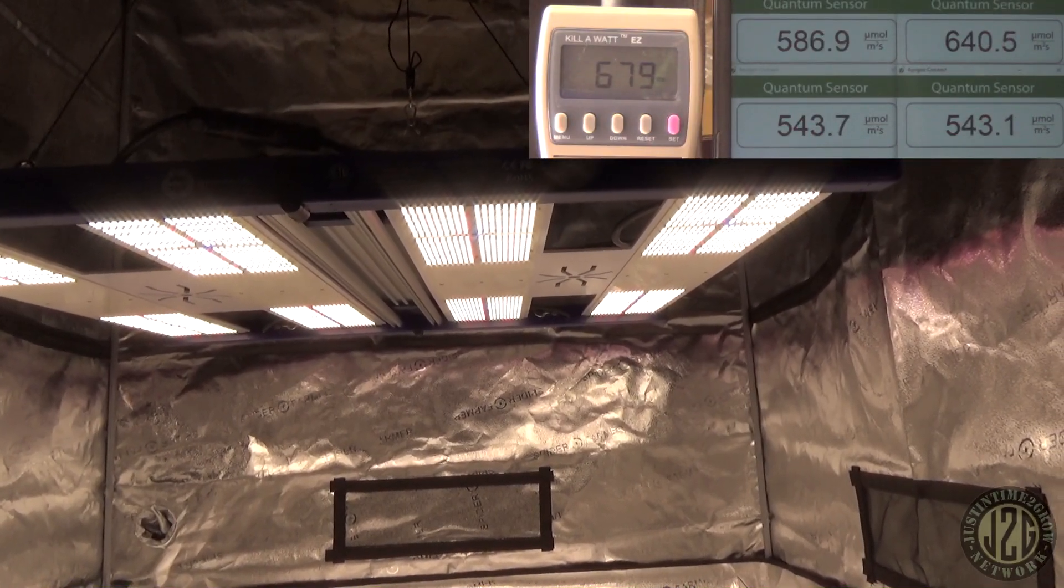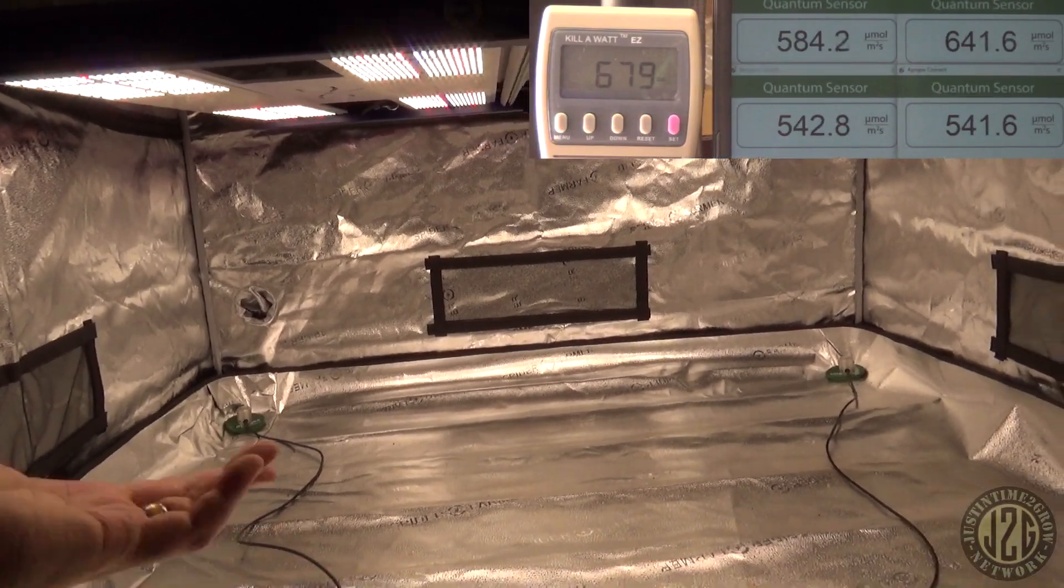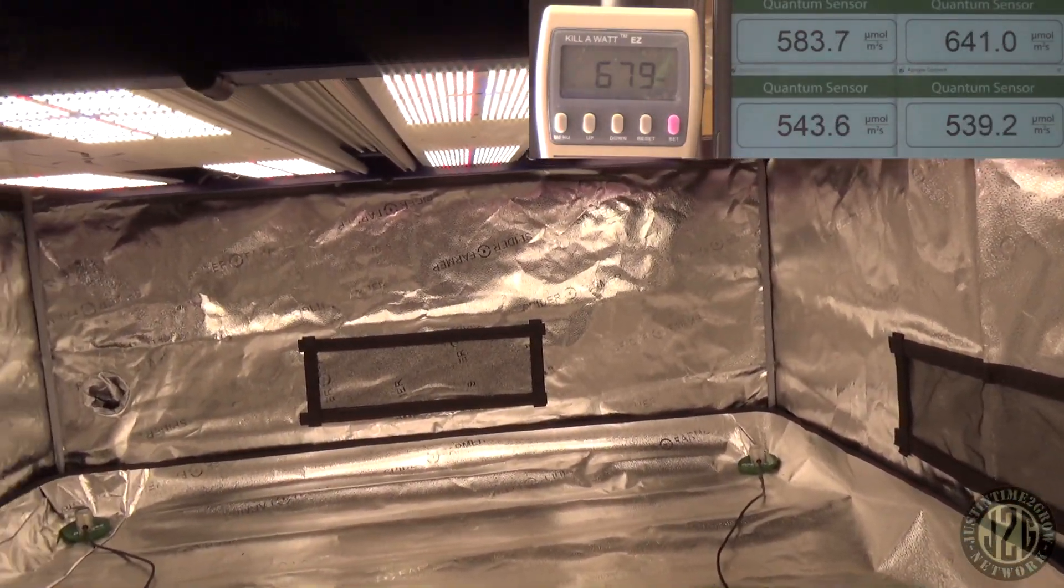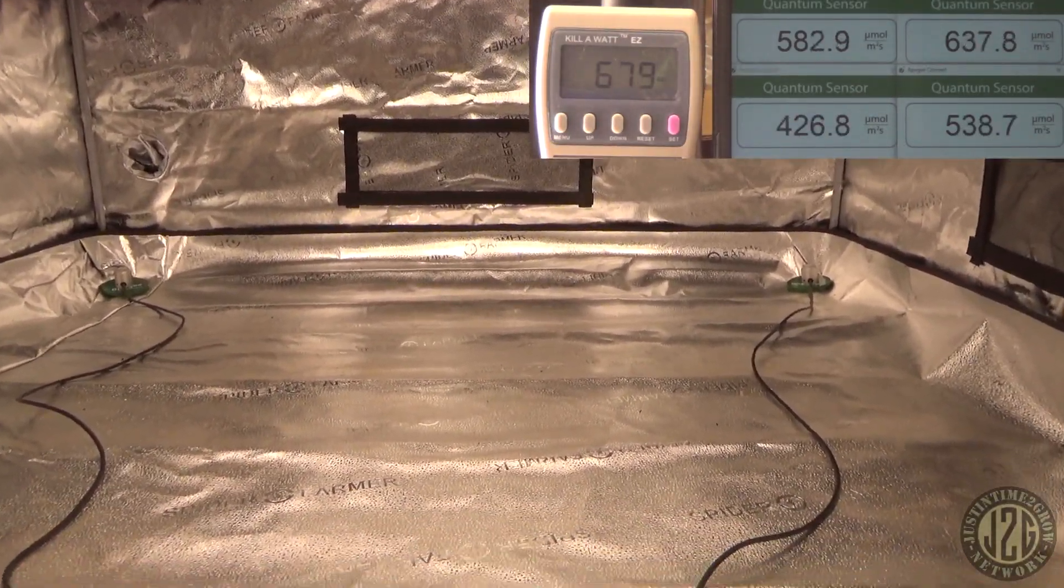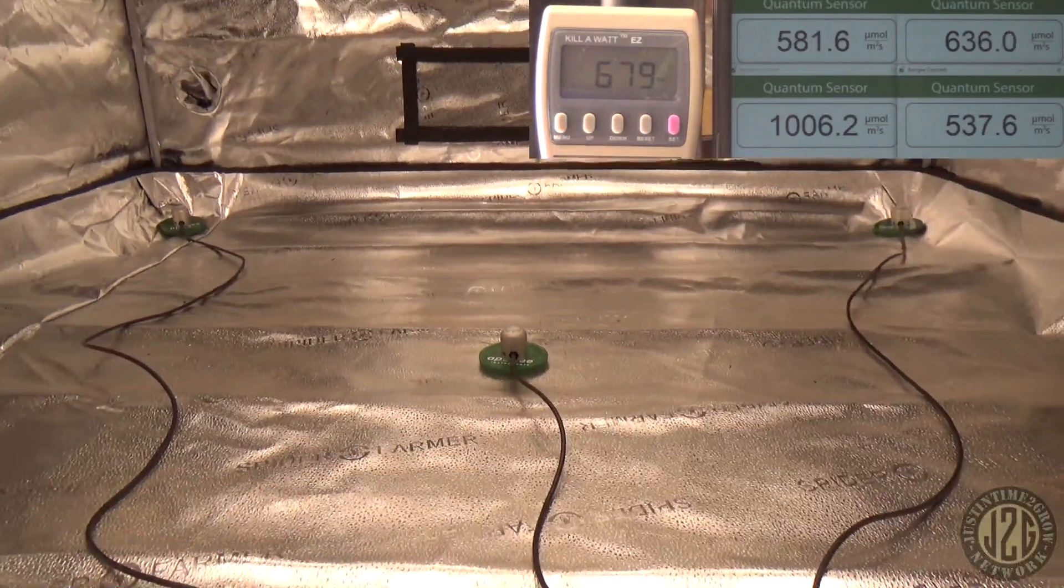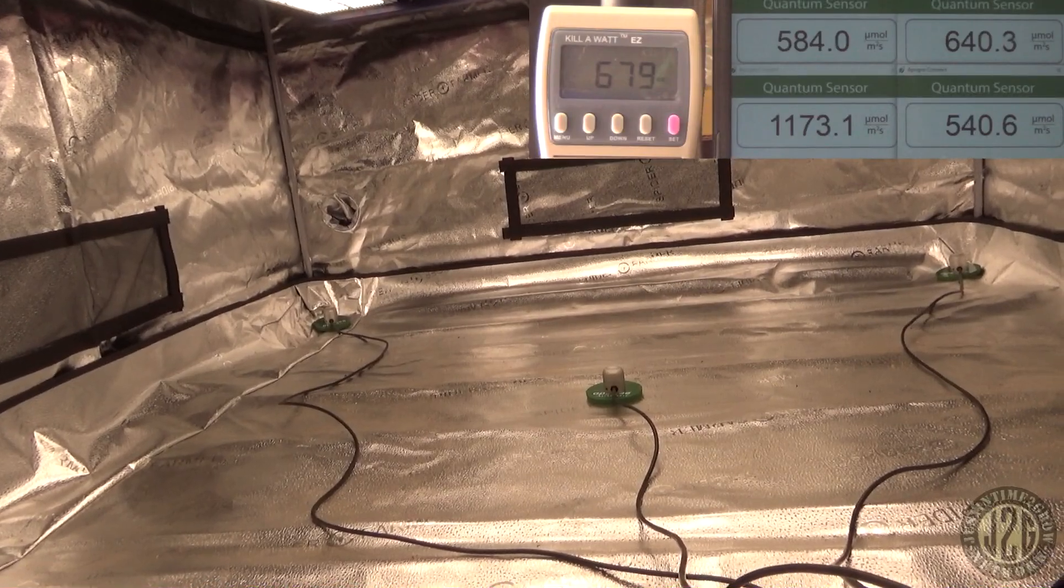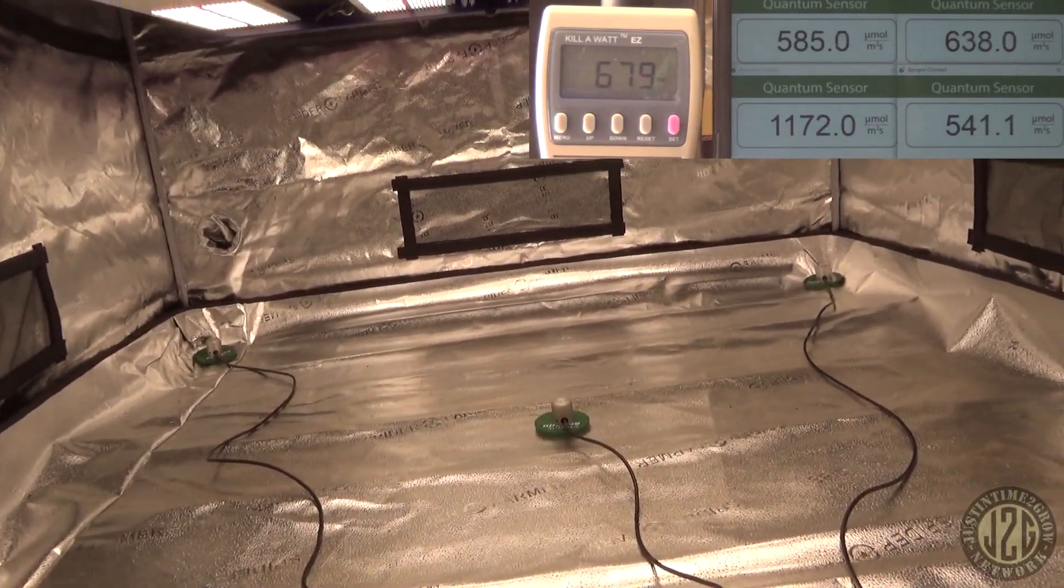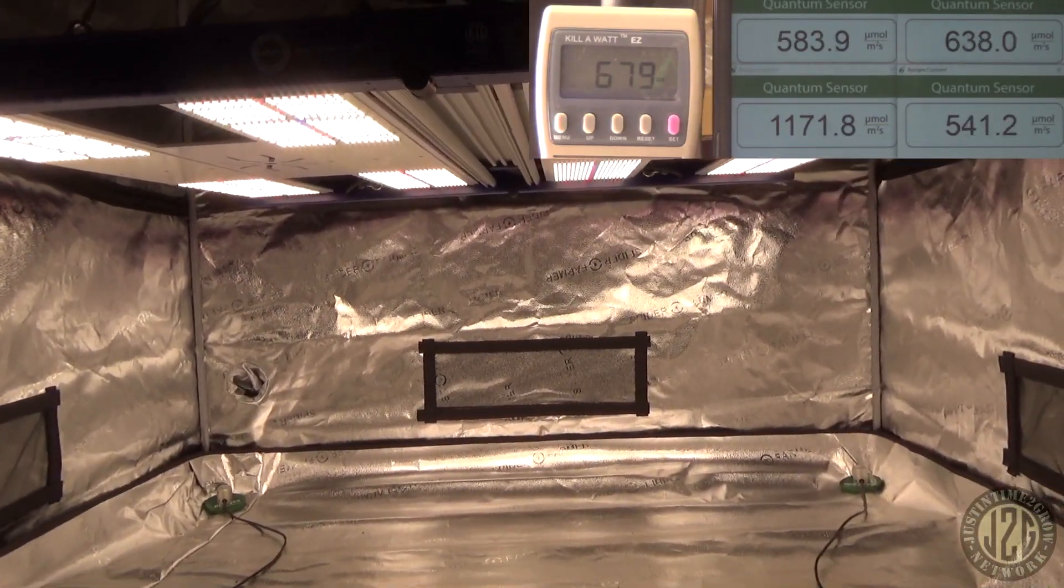Yeah, I mean look at that - 584, 640, 542, 543. So roughly 580 to 600 roughly. I mean you close the door obviously it's going to go up a little bit. That's killing the game. That's killing the game. What do you think the center reading is going to be guys? What do you think the center reading? Let's check it out. 1172 in the middle.